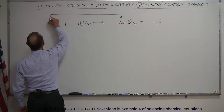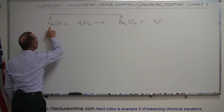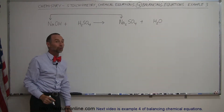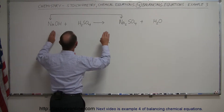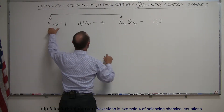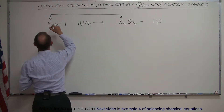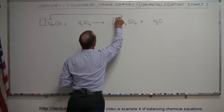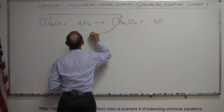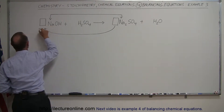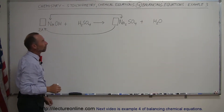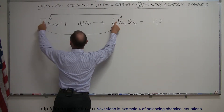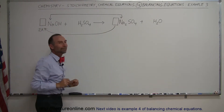In sodium hydroxide we only have one atom of sodium per molecule. In sodium sulfate we have two sodium atoms per molecule, which means in order to get these two balanced you need twice as many of sodium hydroxide as sodium sulfate, otherwise they would not be balanced.